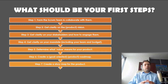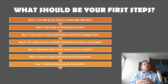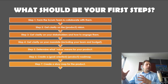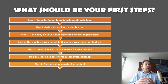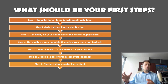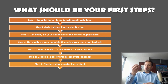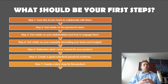Step seven: create a story map for your product. The next step is to create a story map together with some of your stakeholders and developers. The story mapping technique is an awesome way to brainstorm, gain insights, and get a picture of the product you are creating. Refer back to the lecture on user story mapping for more detail.